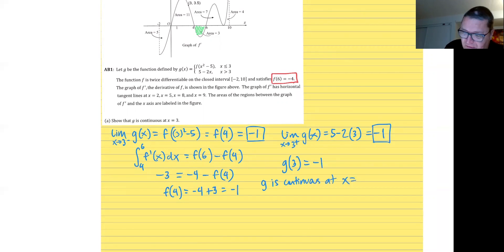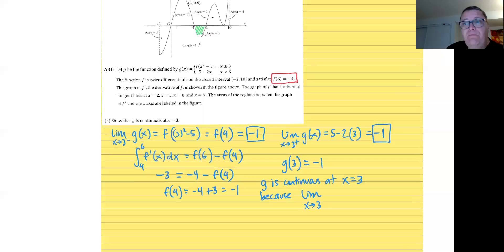So all three things are equal. The conclusion, which we must write in a free response, is: g is continuous at x equals 3, because the limit as x approaches 3 of g of x equals g of 3. And we have all the calculus work to prove that.